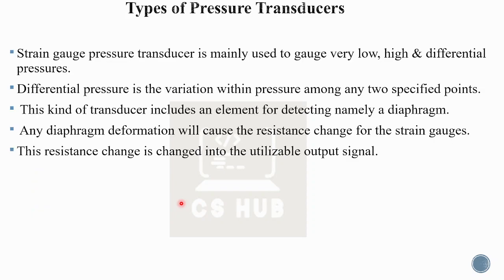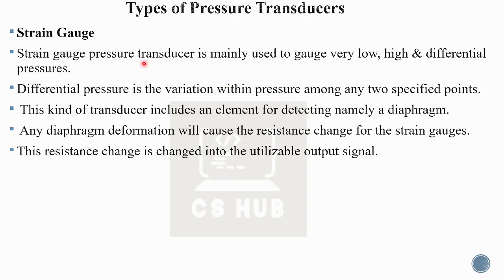What is the Strain Gauge pressure transducer? This pressure transducer is mainly used to gauge very low, high, and differential pressures. Differential pressure is a variation within pressure at any two different points — pressure difference is calculated using the strain gauge. The diaphragm is the main part. Any diaphragm deformation will cause the resistance change of the strain gauge.